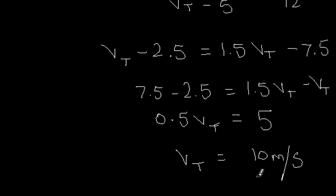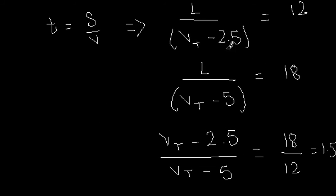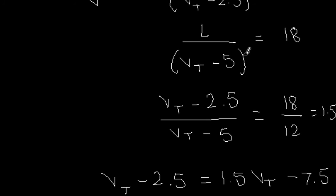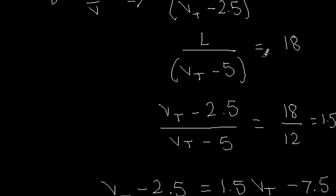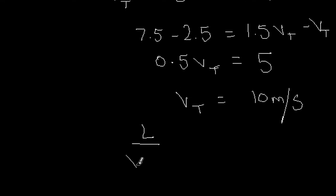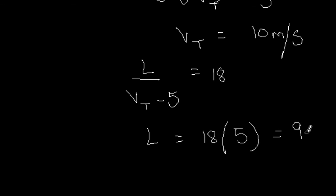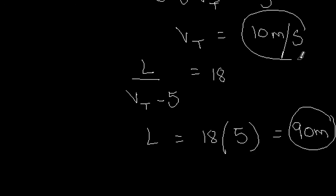Now that the speed of the train is 10 m/s, we substitute into one of the equations to find L. Using L / (Vt - 5) = 18: L = 18 × (10 - 5) = 18 × 5 = 90 meters. So the length of the train is 90 meters and the speed of the train is 10 meters per second. These are the two required quantities.